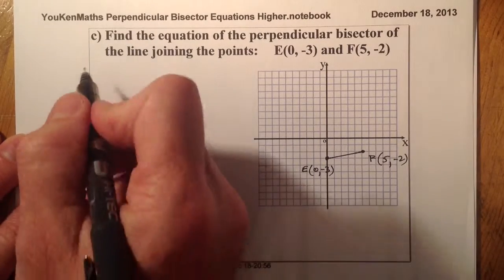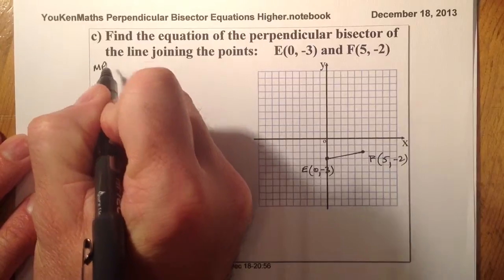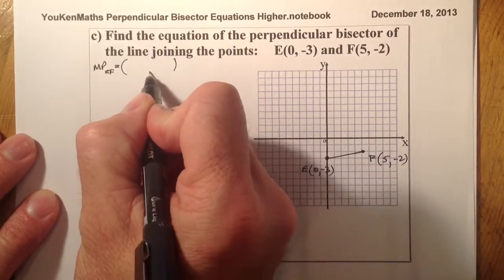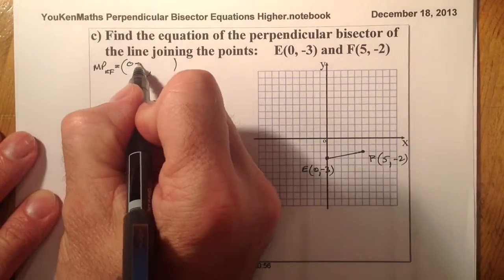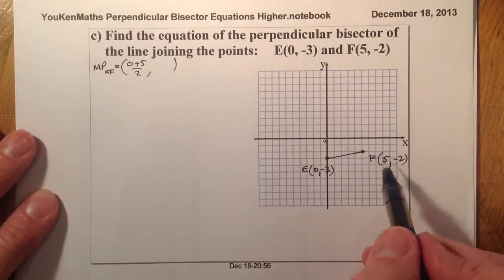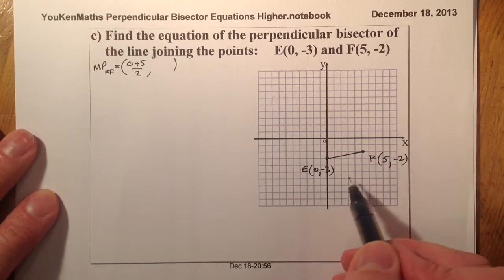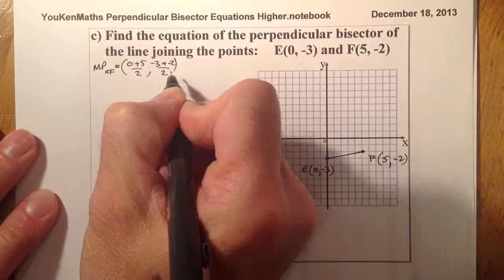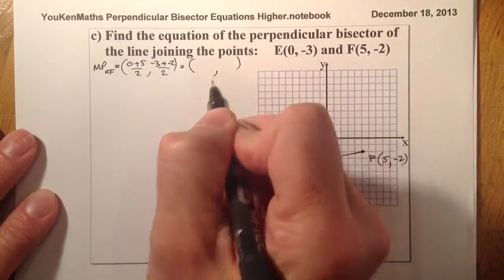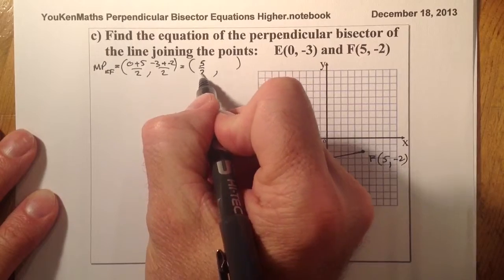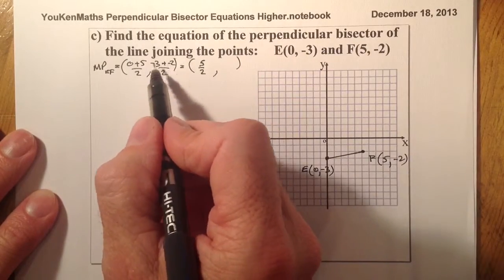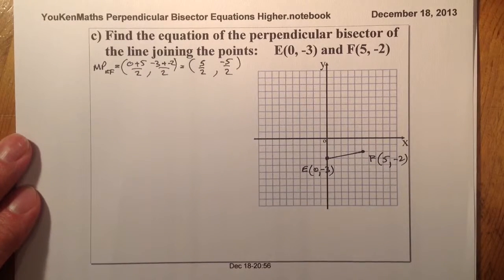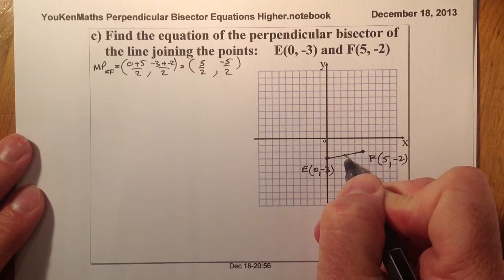Let's find the midpoint of EF. The average of the x-coordinates is 0 plus 5 over 2. And for the y-coordinates we've got minus 3 and minus 2, so minus 3 plus minus 2 all over 2. That gives 5 over 2 for the x, and minus 5 over 2 for the y. So the midpoint of that line is (5/2, -5/2).